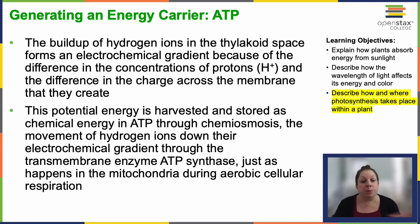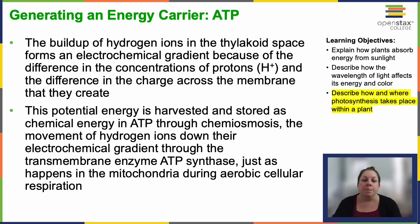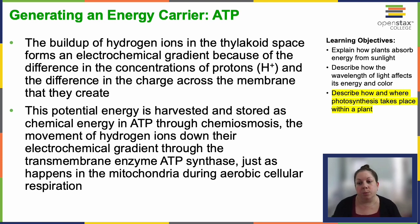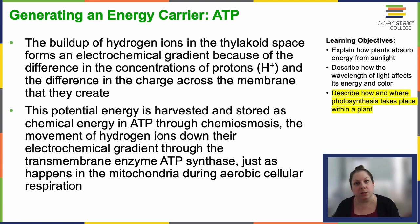These carriers store energy within specific bonds — a phosphate group in the case of ATP, with those high-energy, slightly unstable tertiary third phosphates. And in the form of a hydrogen ion in NADPH. They release that energy — for ATP in the form of that high-energy phosphate, and for NADPH as that hydrogen — into the Calvin cycle, losing atoms or groups of atoms to transform into their lower energy states. For ATP, it loses that third phosphate and transforms to ADP. For NADPH, it loses that hydrogen and becomes NADP+.